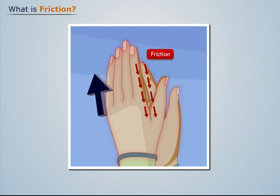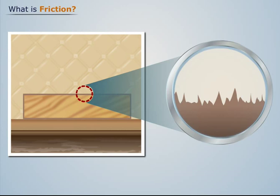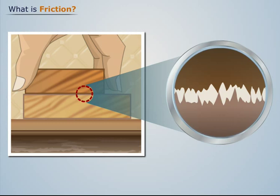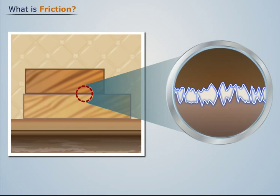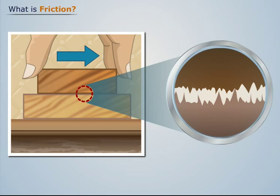A surface is never perfectly smooth. Even very smooth surfaces possess irregularities which are visible only through a microscope. So when two bodies are in contact with each other, the irregularities present on their surfaces tend to interlock with each other. Now when we try to move one body on the surface of the other, the interlocking of irregularities opposes the motion. This opposing force is called friction, and its magnitude depends on the degree of irregularities on the surfaces in contact.